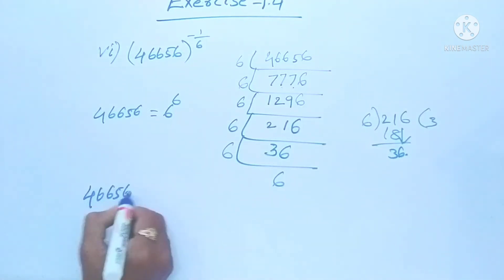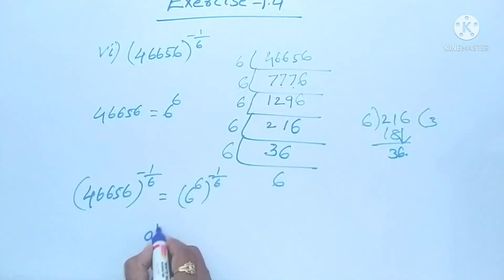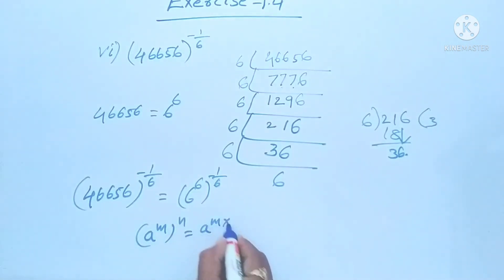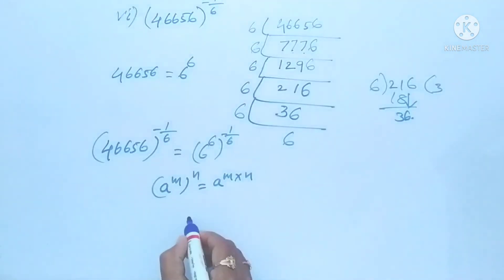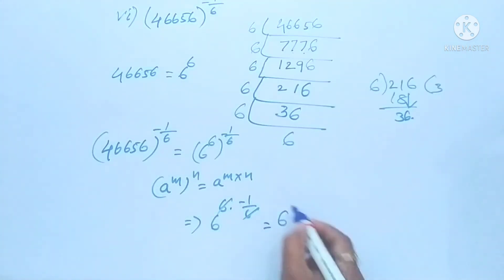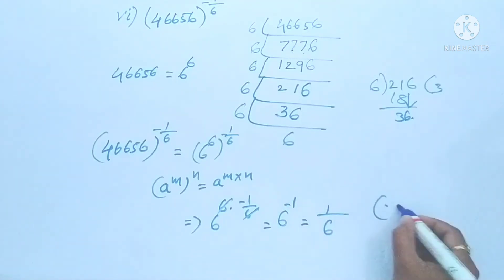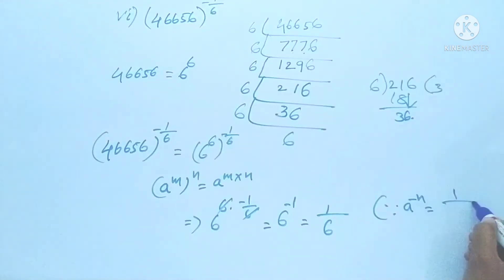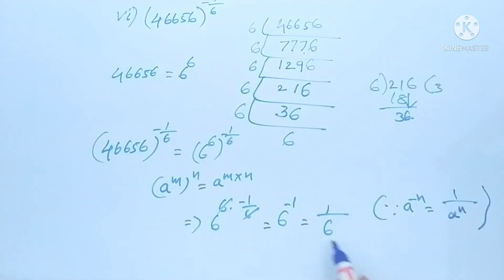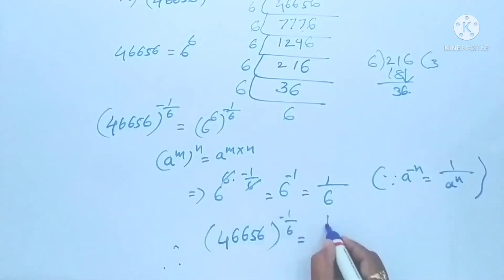So 46,656 whole power minus 1 by 6 equals 6 power 6 whole power minus 1 by 6. Using the formula a power m whole power n equals a power m into n: 6 power 6 into minus 1 by 6 — the 6's cancel — giving 6 power minus 1. Now, 6 power minus 1 equals 1 by 6, because a power minus n equals 1 by a power n. So 6 power 1 is 6, and the final answer is 1 by 6. Therefore, 46,656 to the power minus 1 by 6 equals 1 by 6.